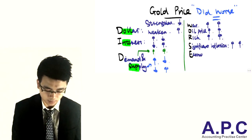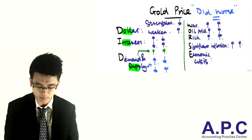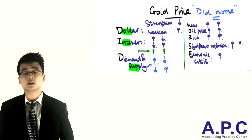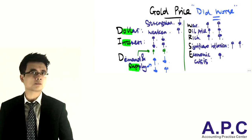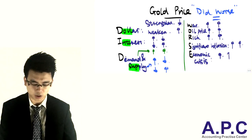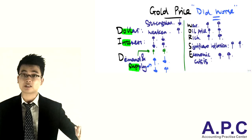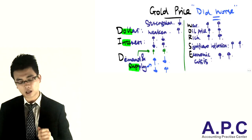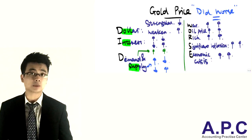And finally, E stands for economic crisis. If an economic crisis happens, people like to save their money by investing into buying gold, because from the economic crisis perspective, their money may be devalued, so this will push up the price of gold. So as you can see, on the left-hand side is the negative relationship between these items and the price of gold, and on the right-hand side there is the positive relationship between the items and the price of gold.